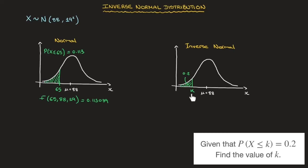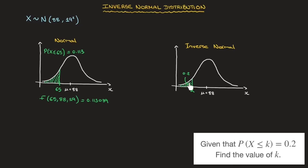Let me clearly distinguish these two problems. When working with the normal distribution function, we're calculating the probability that X be less than or equal to some value, and that value is given in the question — in this case it was 65. So we're given a value of X and calculating an area under the curve. With the inverse normal, on the other hand, we're given an area under the curve and we need to find the corresponding value of X, which I've called K here.